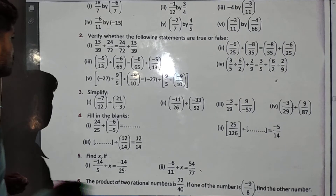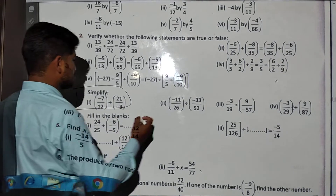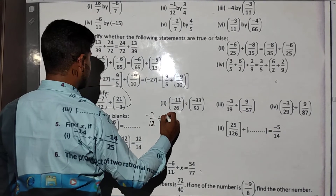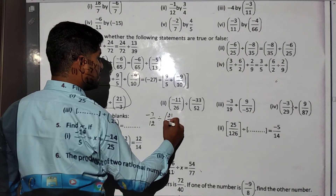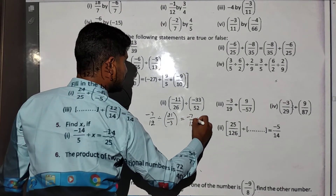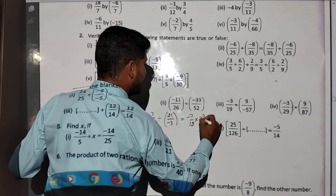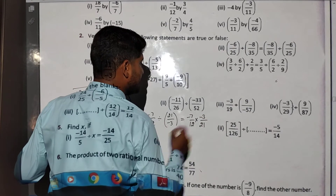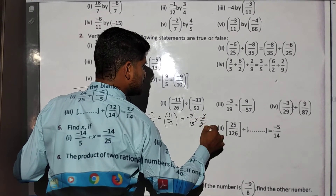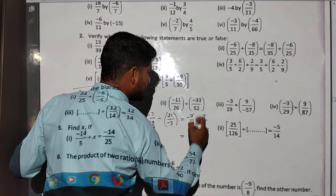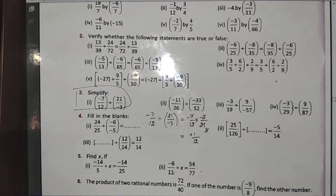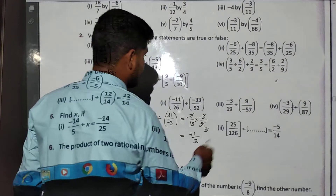Let's solve a question: -7/12 divided by 21/(-3). This equals -7/12 multiplied by the reciprocal, which is -3/21. Simplifying: 7 and 21 cancel (giving 1 and 3), and the two negatives give a positive, leaving 1 divided by 12. So the answer is 1/12.